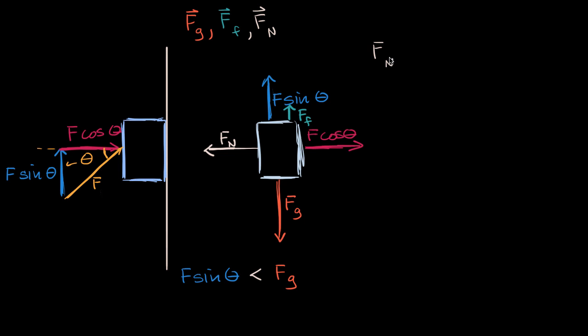well then we could say that F sub N completely counteracts F times cosine of theta. So we could say F sub N is equal to F cosine theta.